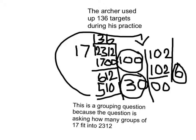And this is a grouping question because the question is asking how many groups of 17 fit into 2,312. And the targets were kind of the groups of 17 because it took 17 shots to go to the next target. So that was kind of what the group was.